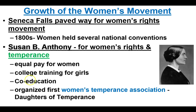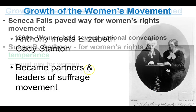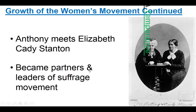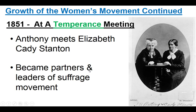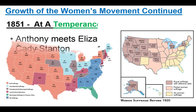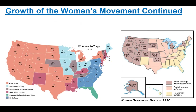Equal pay for women, college training for girls, and co-education — boys and girls going to the same school — were other things advocated and promoted. The key leaders meet in 1851 at a temperance meeting, as the Maine laws banning alcohol were established around 1850-51. They become strong leaders and partners in the suffrage movement.